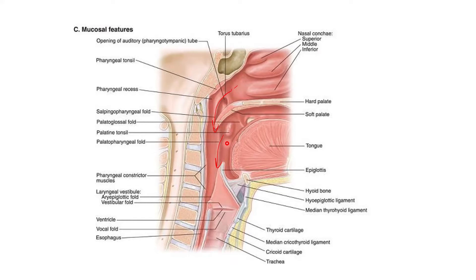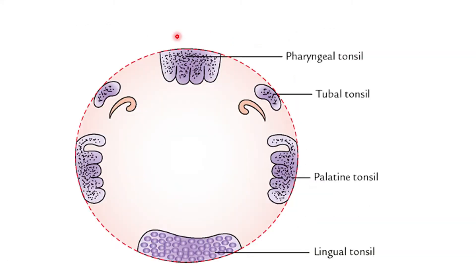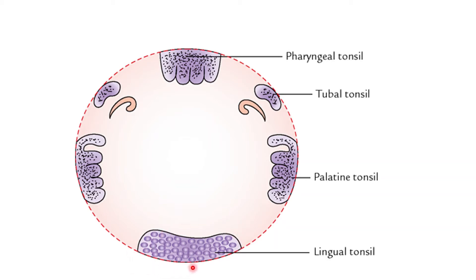The ring is an aggregation of lymphatic tissue and has a roof, floor, and lateral wall. The roof of Waldeyer's ring is contributed by the pharyngeal tonsil, which is also called the nasopharyngeal tonsil. The floor is formed by the lingual tonsil, which is present along the dorsal surface of the posterior one third of the tongue.